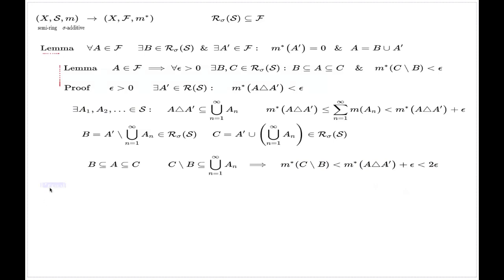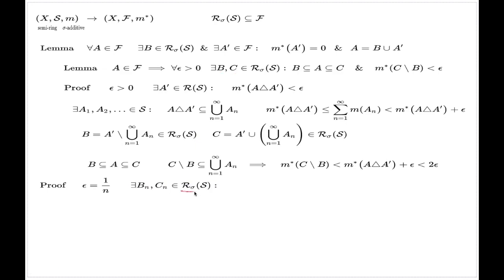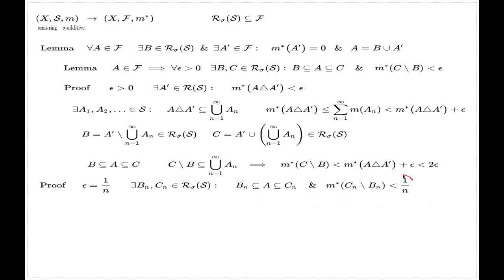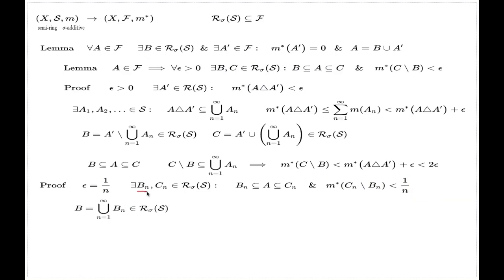Now we can finish the proof of the main lemma. I choose epsilon to be 1/n. For each such epsilon, according to the inner lemma, I have subsets Bn and Cn from the minimal enveloping sigma algebra, with the conditions that Bn ⊆ A and A ⊆ Cn, and that the external measure of Cn \ Bn is controlled by 1/n. I then make an explicit choice for B: it will be the union of all the Bn's. Since this is a countable union and this is a sigma algebra, this will be an element of the sigma algebra.